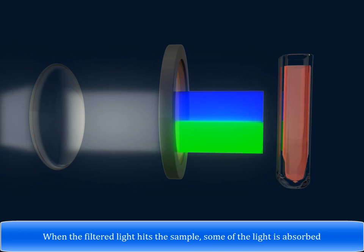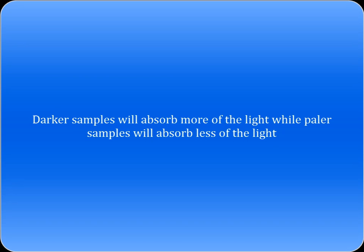When the filtered light hits the sample, some of the light is absorbed. Darker samples will absorb more of the light, while paler samples will absorb less of the light.